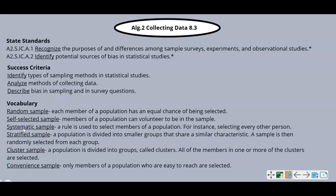A random sample: each member of a population has an equal chance of being selected. Self-selected, as the name implies: members of a population can volunteer to be in the sample. So self-selected means you choose whether you want to do it — you volunteer.